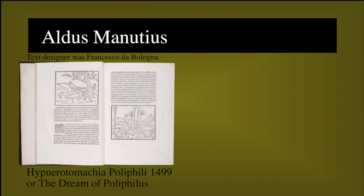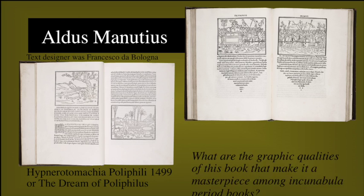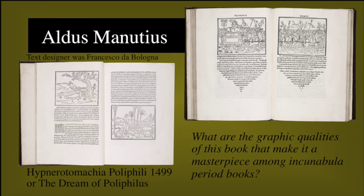As an example of his work, in 1499 he printed The Dream of Polyphilus. It is a romantic fantasy which tells of Polyphilus' wandering quest for his lover who had taken a vow of chastity. This celebration of paganism with erotic overtones and a few explicit illustrations probably escaped scandal only because of its high cost and a very limited Venetian audience. The printer, type designer, author, and artist worked very closely together. The artist, however, is not known, but examine what are the graphic qualities of the book that make it a masterpiece among incunabula period works.